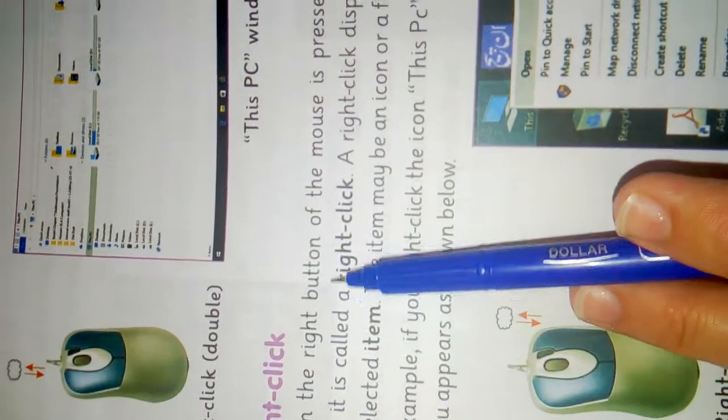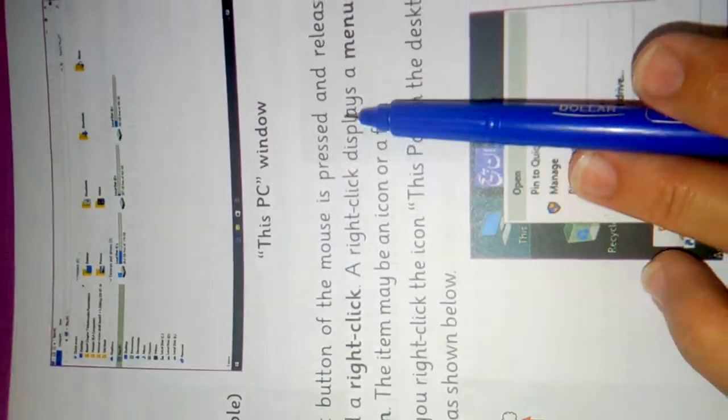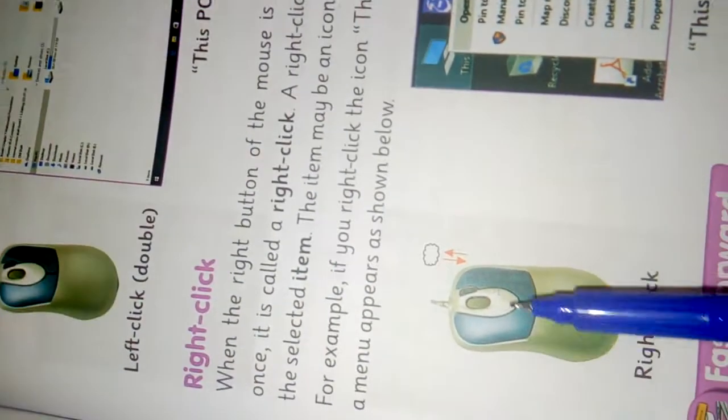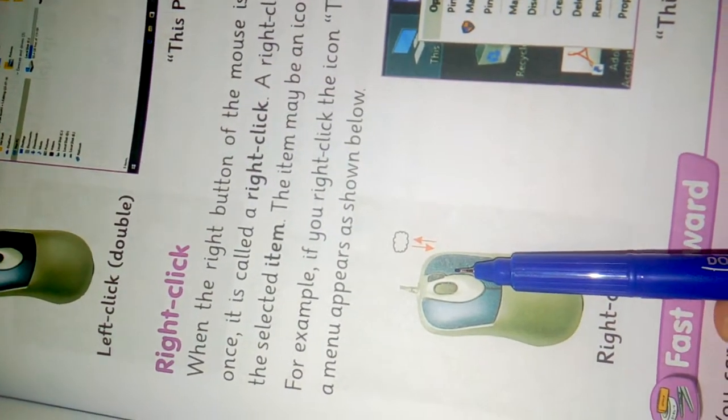Right click: when the right button of the mouse is pressed and released once, it is called a right click. When we press the right button and release it.